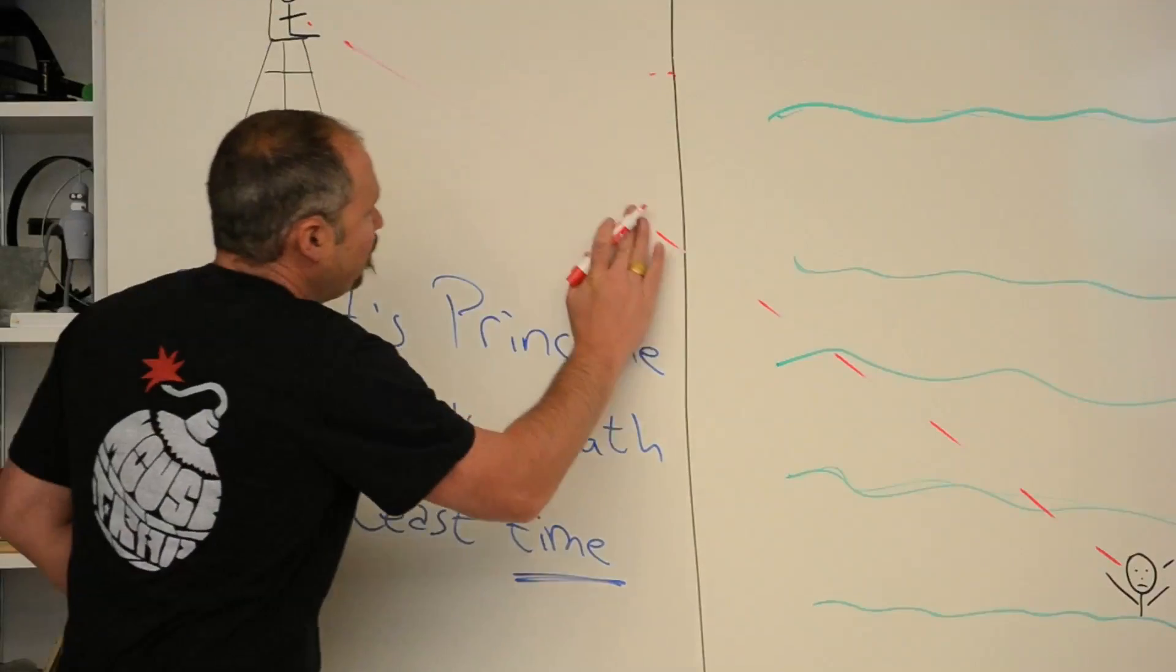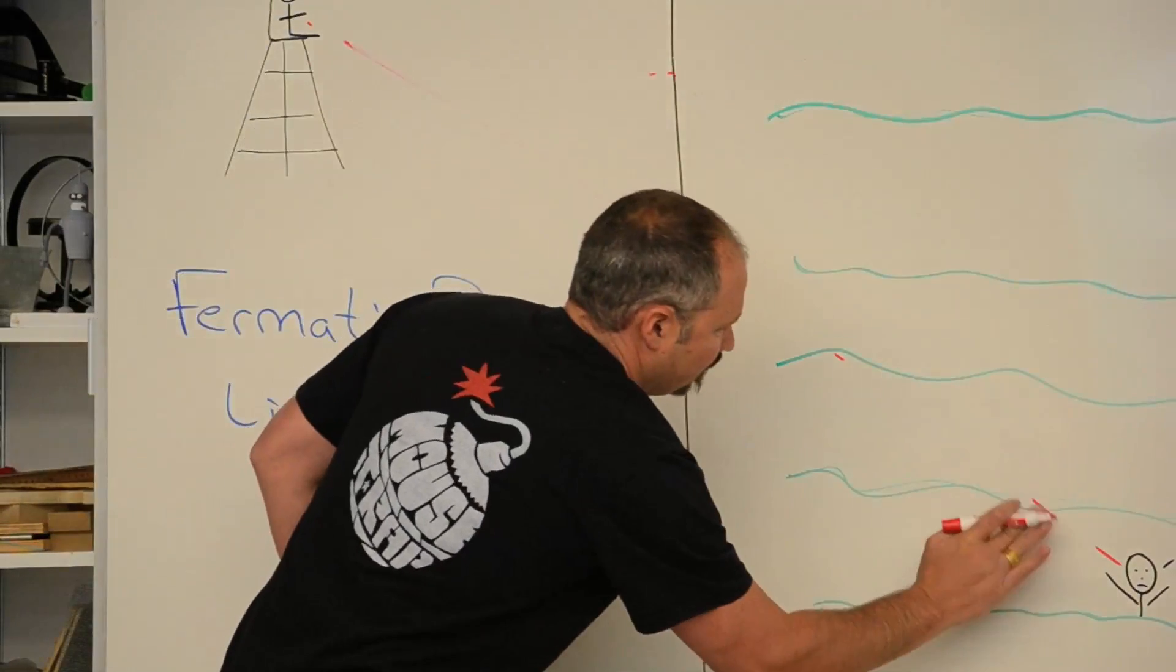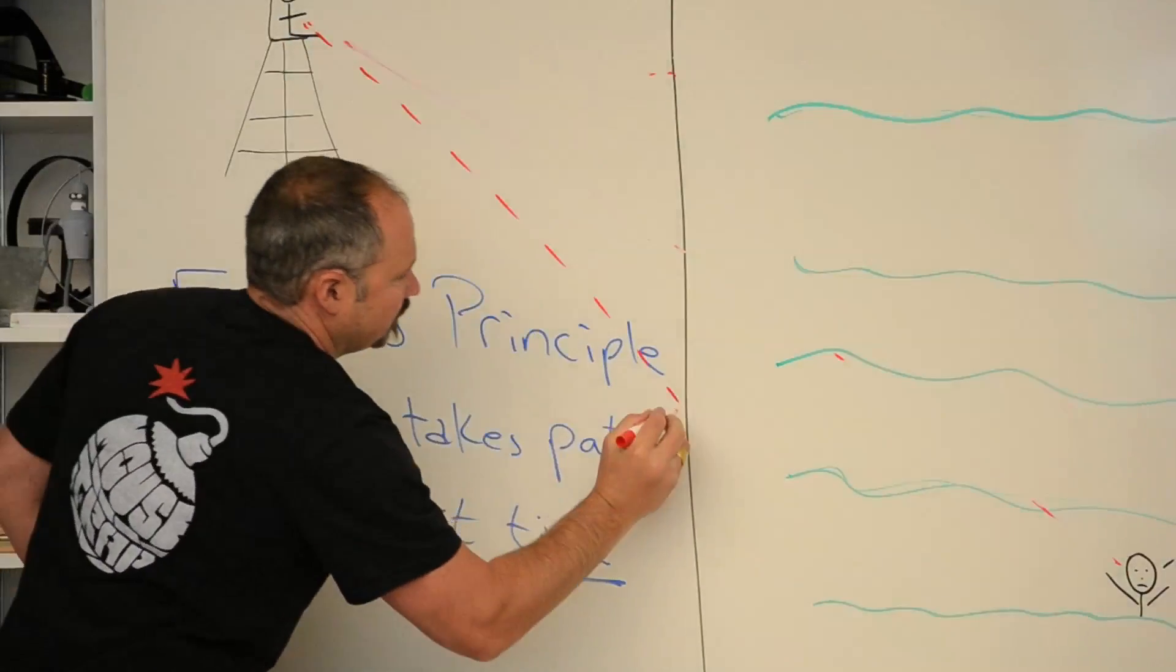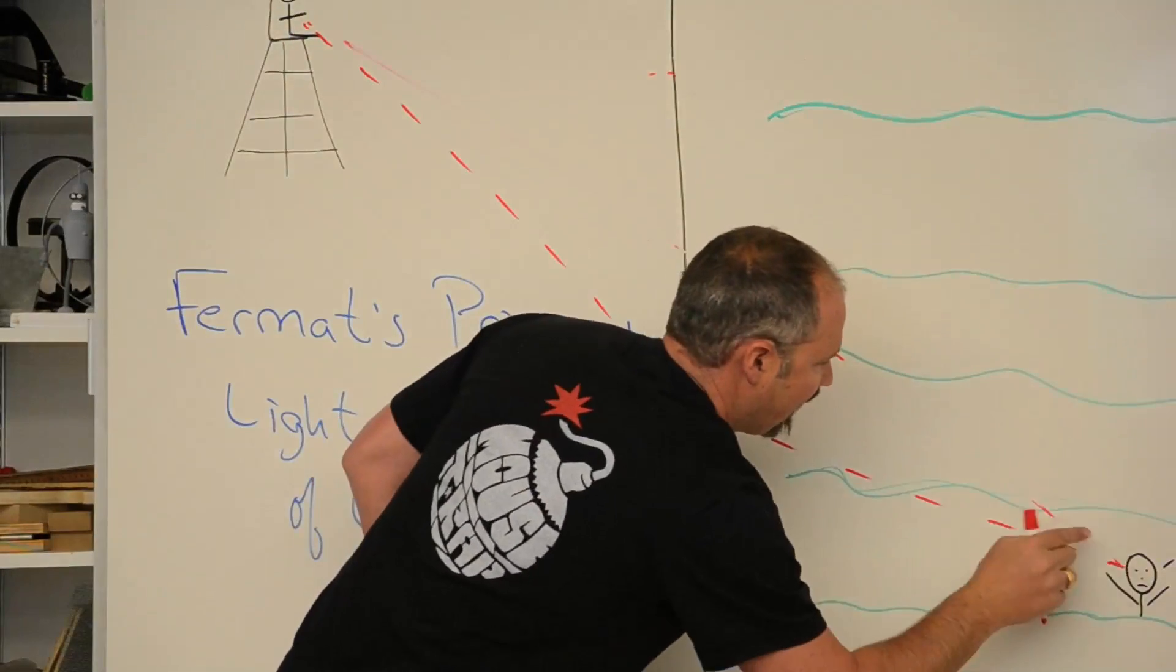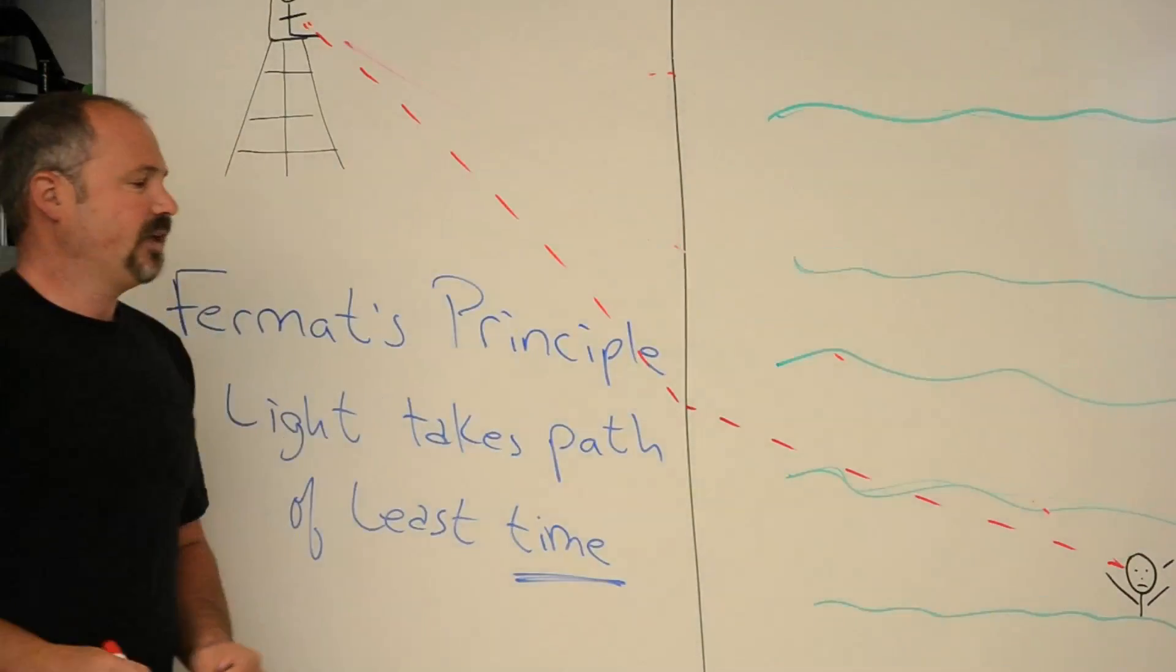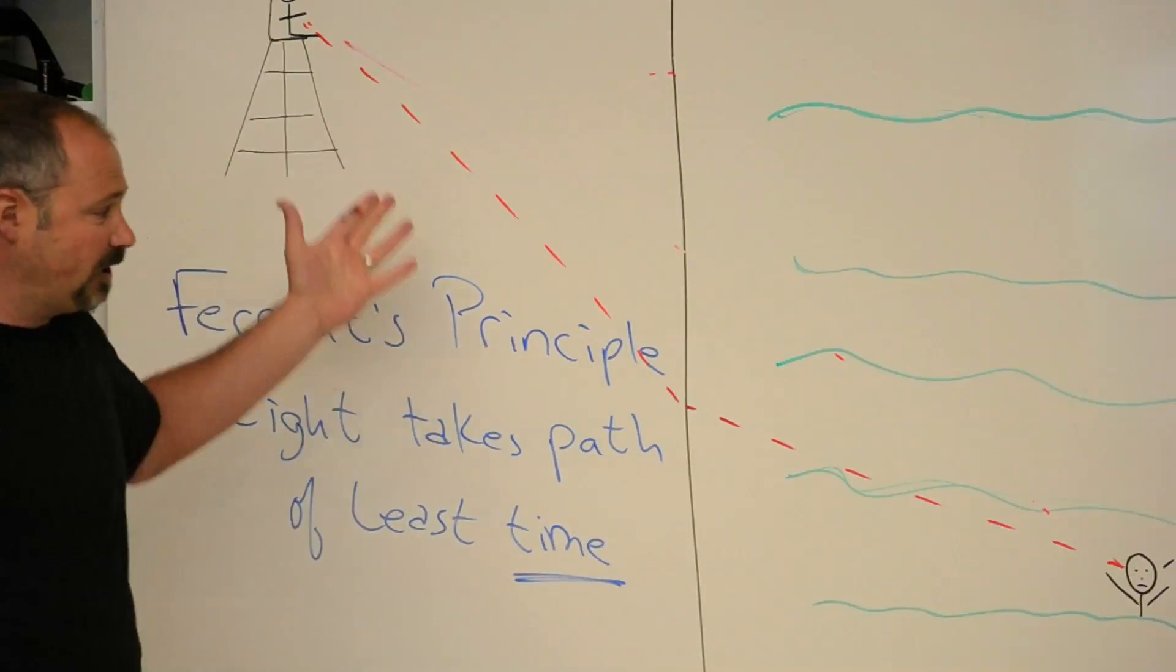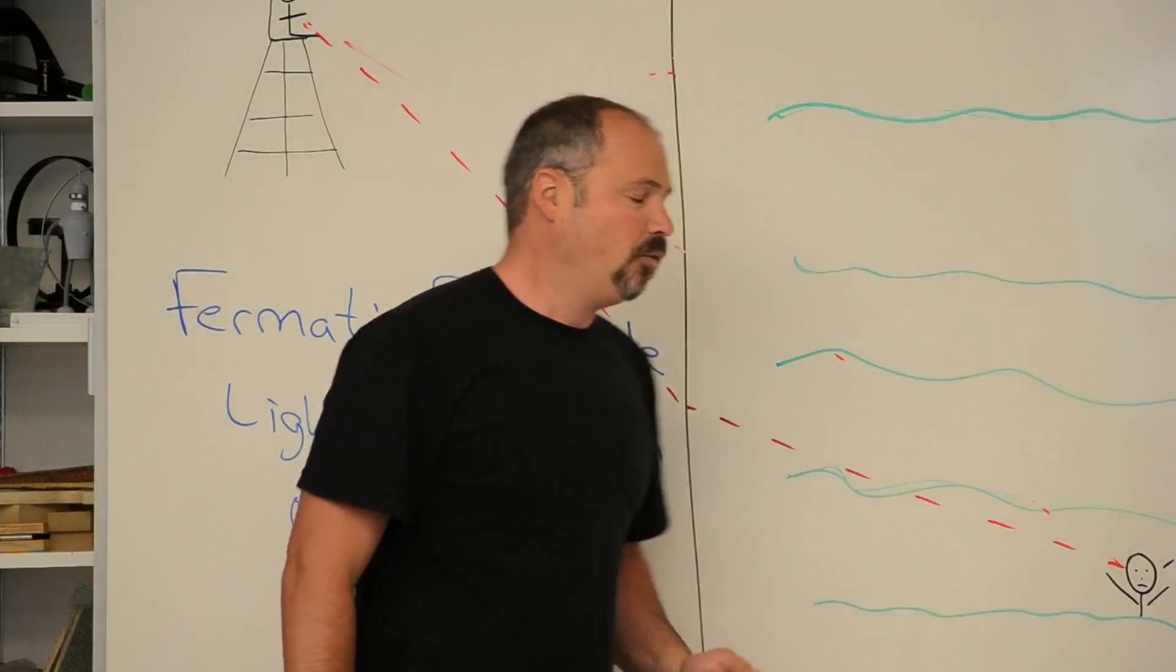So a more clever path would be something like this, and then swim diagonally to it. And that is probably the path of least time. And that's the path that the lifeguard's going to take to save him.